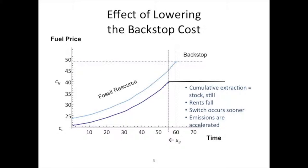Think of this as starting at this point — this is the information you're getting now. Say in 10 years from now we have new information: someone came up with a great idea and the cost of the backstop is lower, or it's looking a lot harder to get, so the cost is higher. You update your information and then it's like you're starting back at time zero again — of course you've exploited some of your stock, so your stock constraint is a little different too. If the competing technology cost is lower, that lowers the value of your asset because you're not credibly going to be able to sell it at as high a price for as long, so if you want to make the most out of it, extract it while you can.